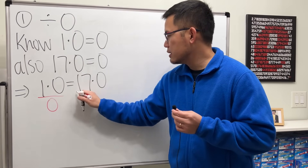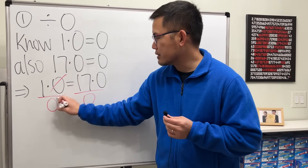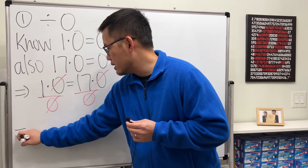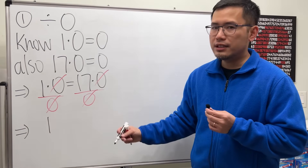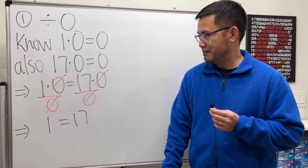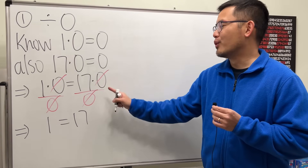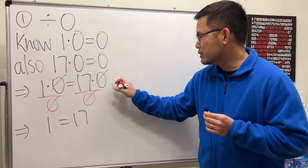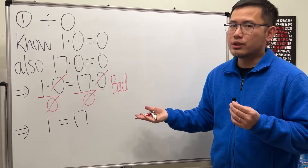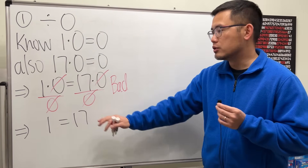If you allow dividing by zero, let's go ahead and do that on both sides. Divide this by zero, divide that by zero — same thing, right? Cross them out. On the left hand side we get one, on the right hand side we get 17. Does this make sense? Of course not. So the mistake is dividing by zero — this right here is bad.